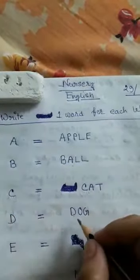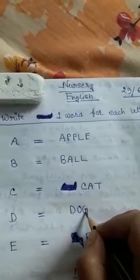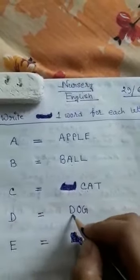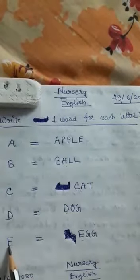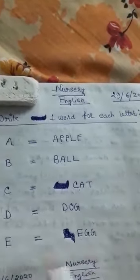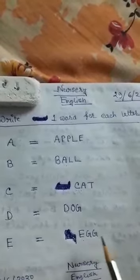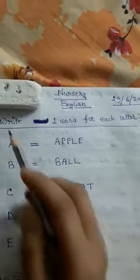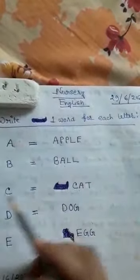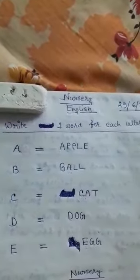Then capital letter D — D for dog, D-O-G, dog. D for dog. Then capital letter E — E for egg, E-G-G, egg. So: A for apple, B for ball, C for cat, D for dog, E for egg. Thank you.